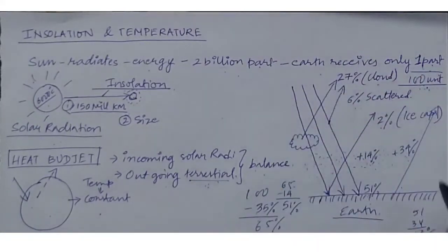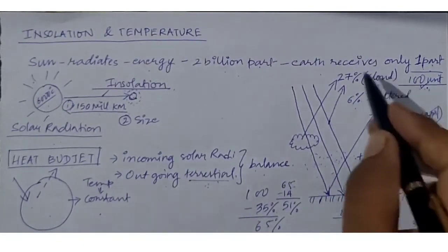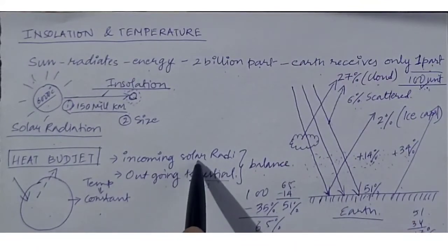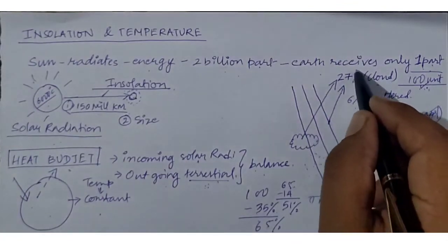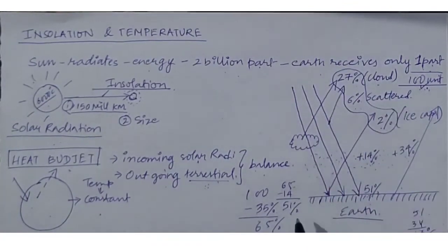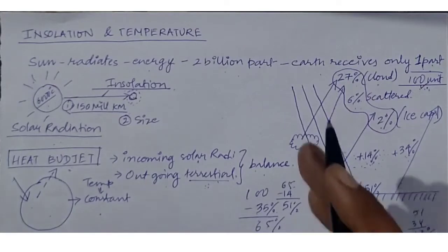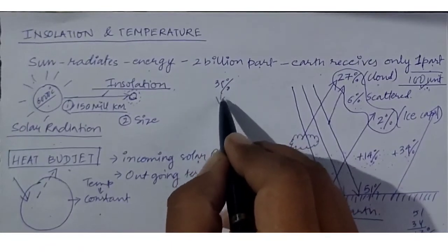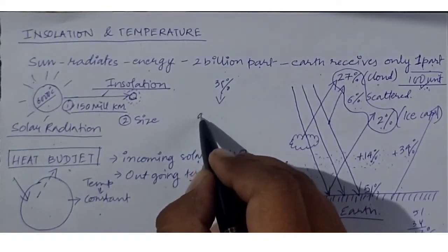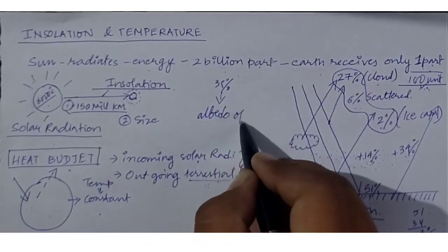So 100 units of solar radiation is well maintained between incoming solar radiation and terrestrial radiation — this phenomenon is known as the heat budget. Also, the 35 percent of radiation reflected back before hitting Earth's surface is called the albedo of the Earth.